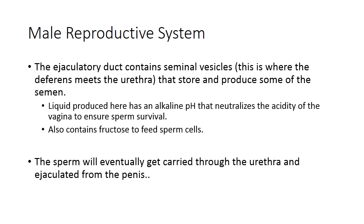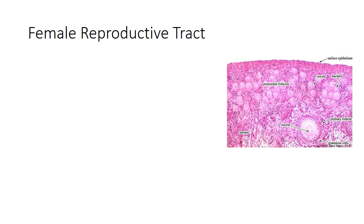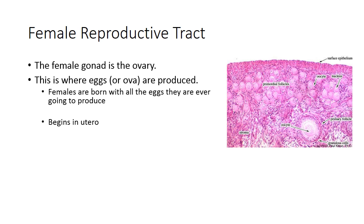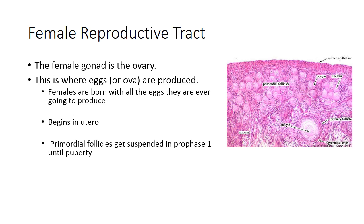Sperm is eventually carried through the urethra and ejaculated from the penis. That is the male reproductive tract in a nutshell. Now for the female reproductive tract: the female gonad is the ovary, where eggs or ova are produced. Females are born with all the eggs they will ever produce — this begins prenatally in utero. The primordial follicles are suspended in prophase one until the female reaches puberty, at which point they continue meiotic development and begin going through follicular stages.